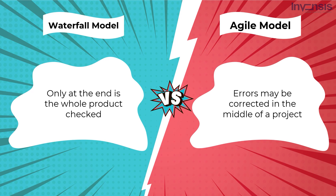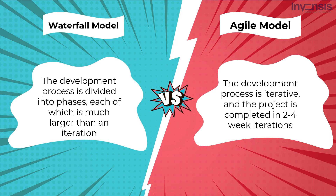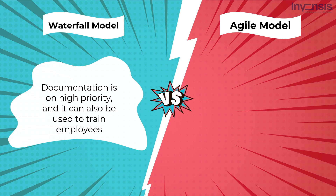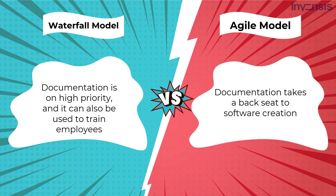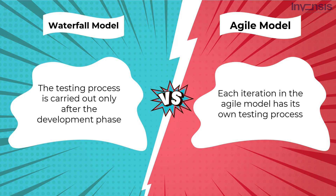In an Agile model, errors may be corrected in the middle of a project. In the Waterfall model, the development process is divided into phases each much larger than an iteration, whereas the Agile model has every process concluding with a thorough overview of the next phase, completed in two to four-week iterations. Documentation is a high priority in the Waterfall model and can be used to train employees. Documentation takes a backseat in Agile. Testing in Waterfall is carried out only after the development phase, while each Agile iteration has its own testing process, enabling regression testing whenever new functions are announced.